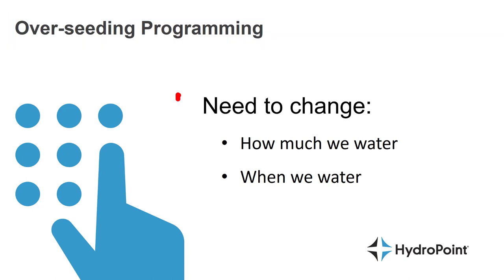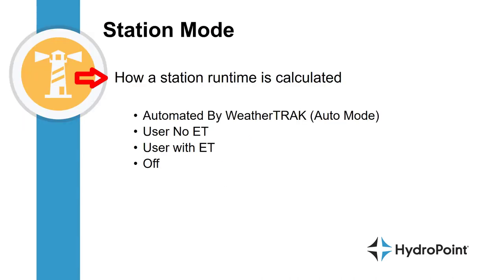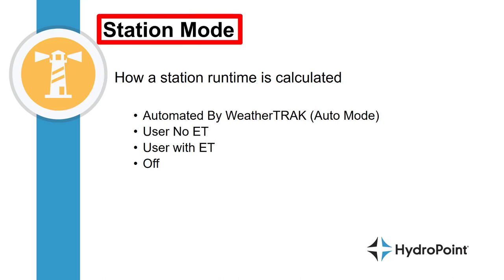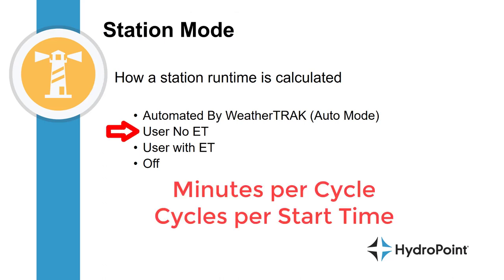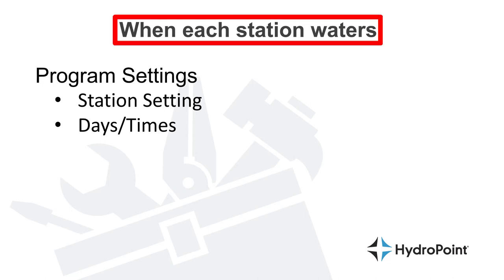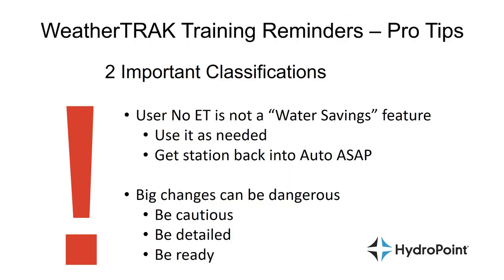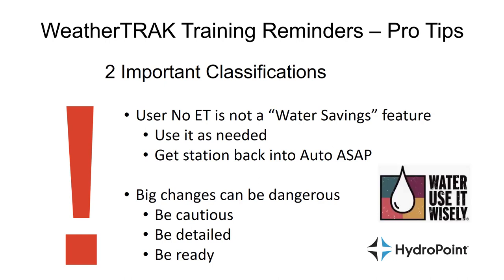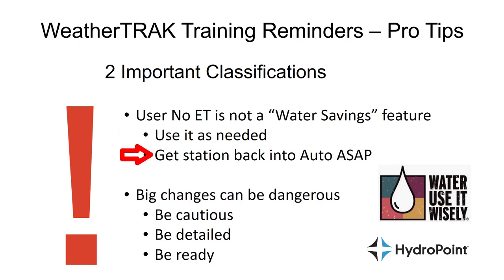For the overseeding programming on your WeatherTrack controller, you're going to want to change how much you water each station and when you water each station. To change each station's irrigation schedule, we'll change the station mode to user no ET and define exactly how many minutes we want each station to run. Using the station settings and the days and times menu, we'll switch those stations from nighttime irrigation to daytime irrigation. Remember that many of our customers purchase WeatherTrack as part of a water saving initiative, and user no ET is not a water saving feature — our best water saving stories come when stations are programmed and automated by WeatherTrack. So a savvy WeatherTrack user knows that user no ET is necessary for certain landscape applications, but you're not saving any water by using it. Please get those stations back into auto as soon as possible.